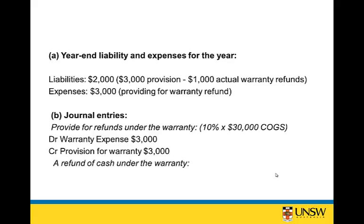During the period we also had some cash refunds under the warranty, which is a using up of the provision set aside before. So we debit the warranty provision and credit cash. It could alternatively have been a credit to inventory if we had damaged or faulty goods returned in exchange for new goods, but in this case it's a cash refund.